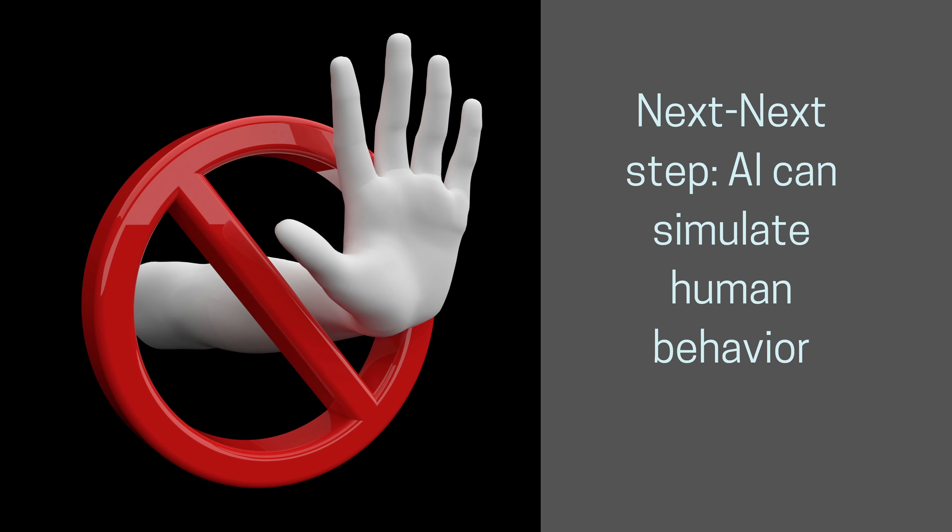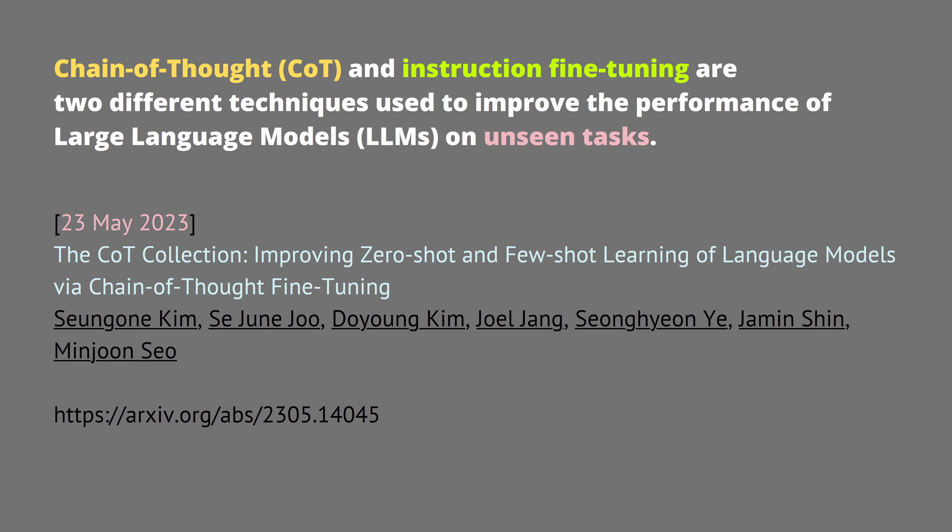Welcome all beginners — this session is for you. Chain of Thought and instruction fine-tuning are two different techniques we use to improve the performance of large language models like ChatGPT and GPT-4 for unseen tasks. Unseen task means something the model has not been trained on. There's now a new paper from the 23rd of May 2023 called the COT Collection — a huge dataset from some very intelligent people.